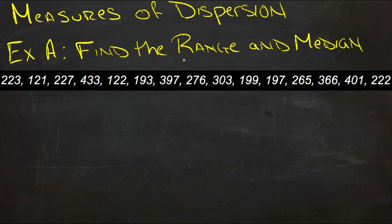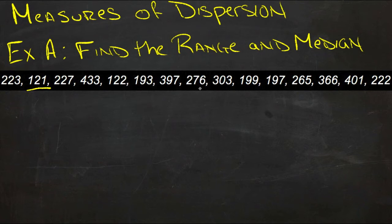If we didn't need to find the median, we would just look through it and see what the smallest and largest numbers were. In this case, it looks like the smallest one is 121 and the largest one is 433. So our range is going to be the difference between 121 and 433. But let's go ahead and order these and then it would be easy to see that as well.